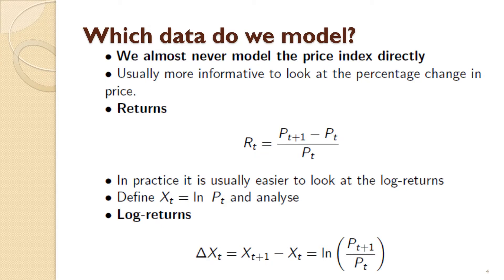In terms of the data that we model, you almost never model a price index directly — this is quite counterintuitive. It's usually more informative to look at the percentage change in price. You can define the returns as today's price minus yesterday's price, all over yesterday's price. This gives a sense of scale and direction: if the return is positive, the price has increased from yesterday; if the return is large and positive, the price has gone up a lot. For stable financial assets, lots of these returns are very, very small — incremental changes between one day and the next.